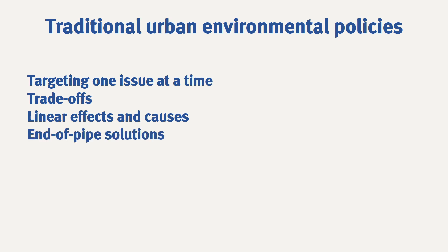The next limitation of traditional policies is their end-of-pipe approach. In other words, traditional policies offer downstream solutions that aim to minimize harmful effects through efficiency instead of questioning the root of the problem itself. For instance, end-of-pipe solutions could be the introduction of catalytic converters in cars. While they reduce the pollution coming from cars, they don't solve the whole mobility issue.